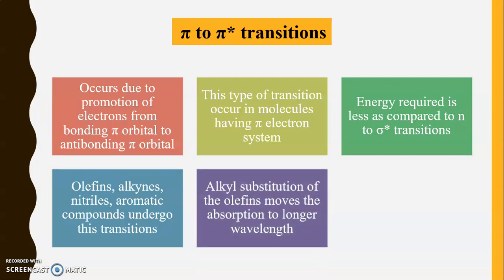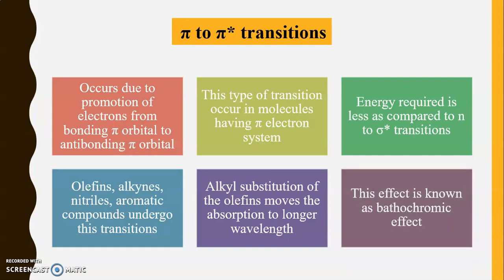Alkyl substitution on olefins moves the absorption to a longer wavelength, meaning less energy is required for the transition. This happens because the double bonds are destabilized to a lesser extent due to the alkyl substitution, shifting absorption toward longer wavelength. This effect is known as the bathochromic effect, where a shift of wavelength to a longer value is called a bathochromic effect.